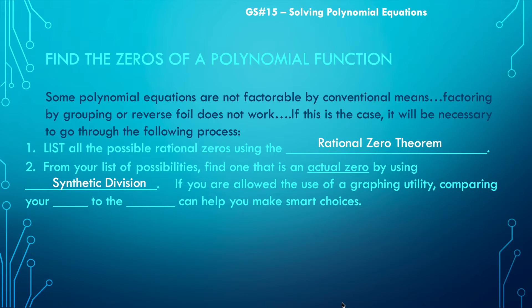Now if you're allowed to use a graph and calculator, comparing your list to the graph can help you make smart choices. If you're not allowed to use a graph, you're going to have to do some guessing and checking. If you are my student, go ahead and compare your list to a graph — you're looking for x-intercepts.